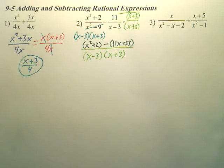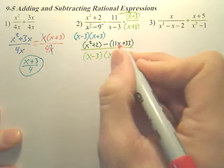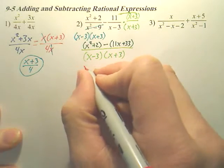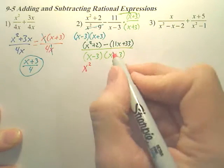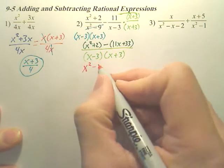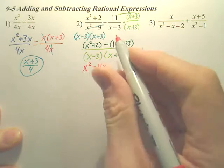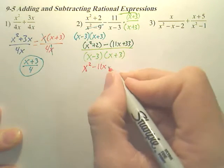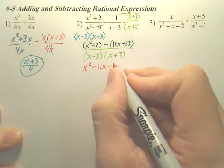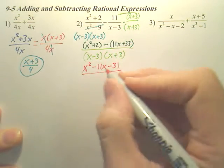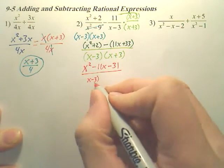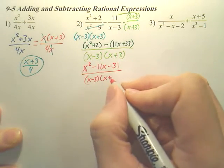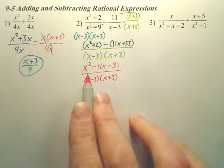Are we done? No. Can we actually simplify the top? Yeah. Let's simplify the top down. What it looks like we got here is X squared. Isn't that going to be minus 11X? And then don't we have 2 minus 33? 2 minus 33 is negative 31.